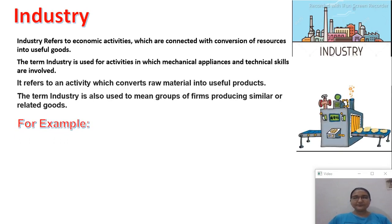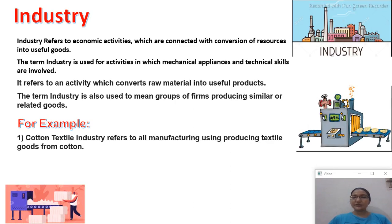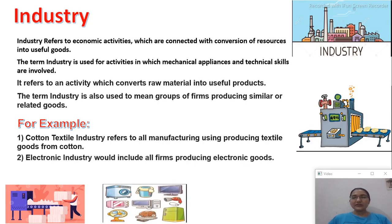Cotton textile industries refer to all firms manufacturing and producing textile goods from cotton — those firms which convert cotton as a raw material into finished goods. Electronic industries include all firms producing electronic goods, for example Havells, Orient — they are all electronic firms because they produce similar products.